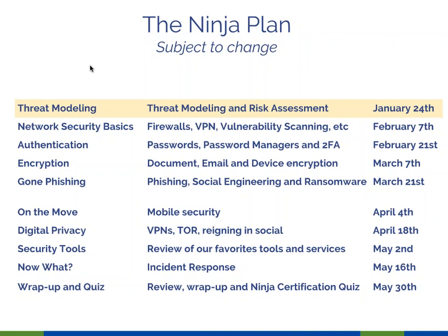Here's our ninja plan, which is subject to change. Today we're covering threat modeling and risk assessment. In two weeks, network security basics. On February 21st, authentication — passwords, password managers, two-factor authentication. On March 7th, encryption — document, email, and device encryption. March 21st, phishing, social engineering, and ransomware, called Gone Phishing. April 4th, mobile security — smartphones, laptops, working on the move, joining wireless networks. April 18th, digital privacy — virtual private networks, Tor, and reining in your social exposure.